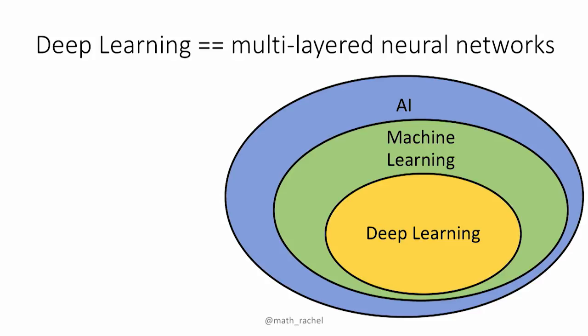Just the vocabulary: deep learning refers to multi-layered neural networks. It's a very specific class of algorithms that's been given this ambiguous name that overloads two common words. It's a subset of machine learning, which is a subset of AI. And AI is a very broad field, but most of the advances you hear about happening right now are all coming from deep learning, this one family of algorithms.